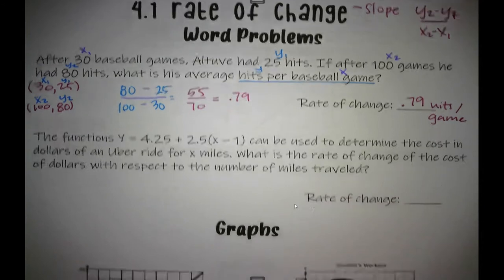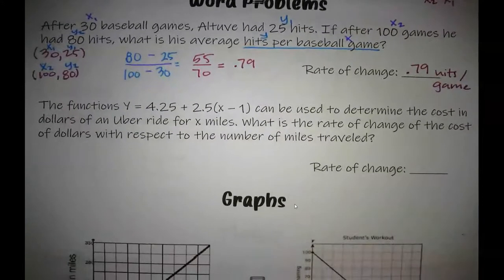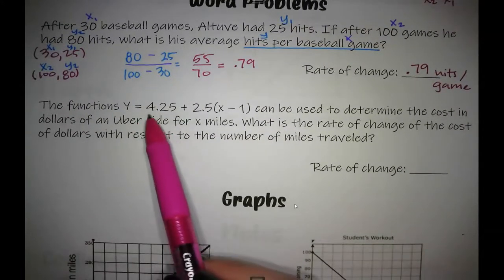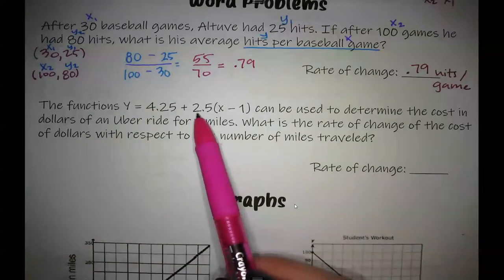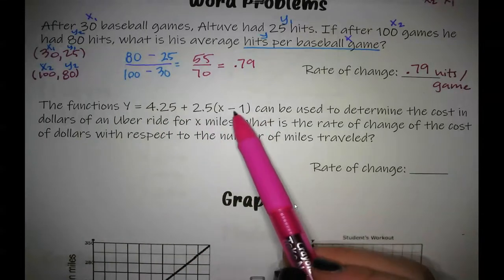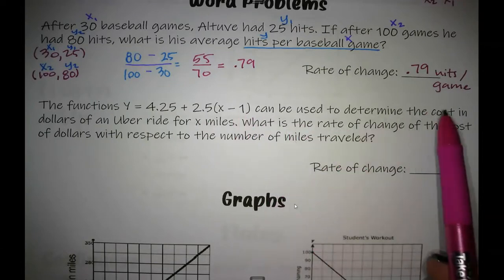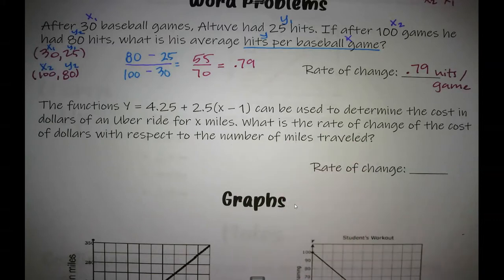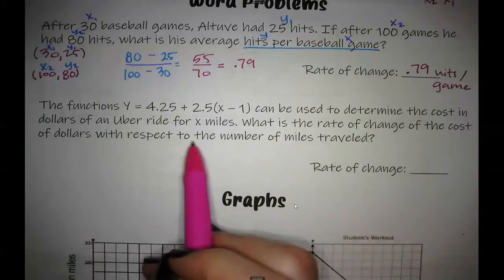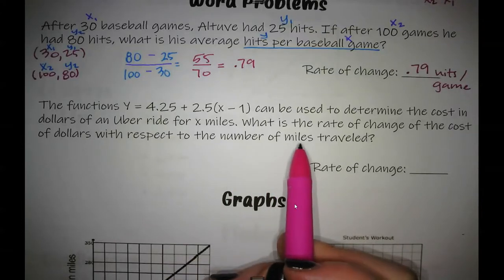All right, let's look at another example. The function Y equals 4.25 plus 2.5 times X minus 1 can be used to determine the cost in dollars of an Uber ride for X miles. What is the rate of change of the cost in dollars with respect to the number of miles traveled?